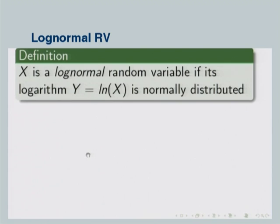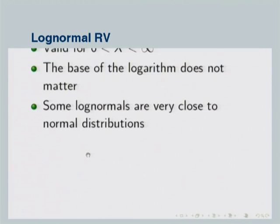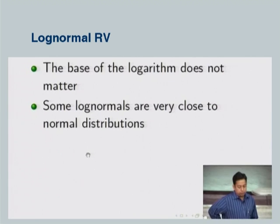How do you define the log-normal? X is a log-normal random variable if its logarithm is normally distributed. So Y defined as ln(X) is normally distributed, then X is a log-normal random variable. It is valid in the range 0 to infinity. The base of the logarithm is not important — you can use natural log, base 10, or base 2.